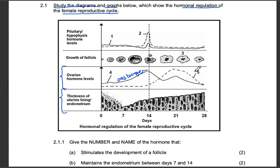Hormone number five is progesterone, which is secreted by the corpus luteum and it all happens after day 14. It forms a mountain shape — increasing just after day 14. What happens from day 22 to day 28 depends on whether fertilization takes place: if fertilization does not take place, the graph decreases; if fertilization takes place, the graph will increase.